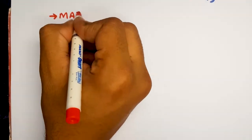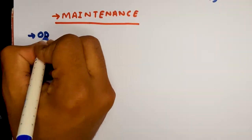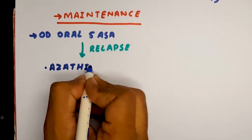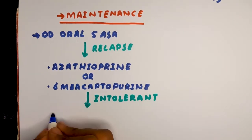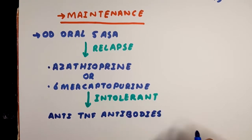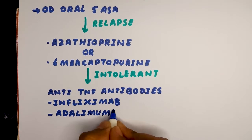If the patient does go into remission, we give daily oral 5-ASA. If the patient relapses, we give azathioprine or 6-mercaptopurine. If the patient is intolerant to these, we start with anti-TNF antibodies like infliximab and adalimumab, or we can use anti-alpha-4-beta-7 antibodies which include vedolizumab.